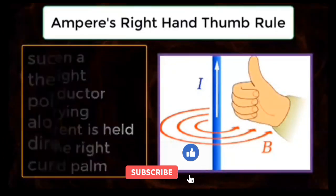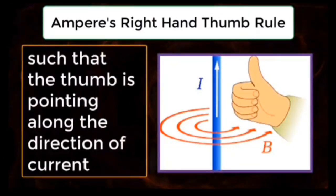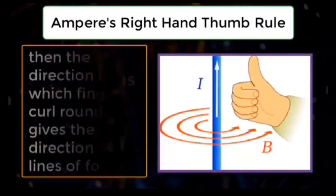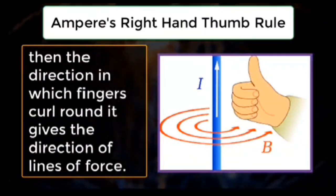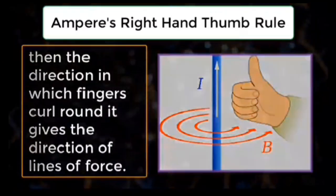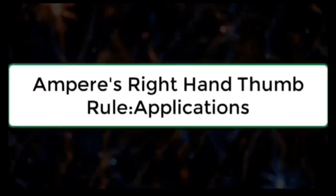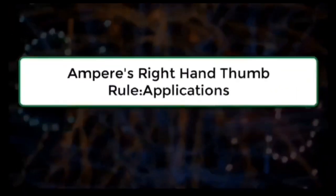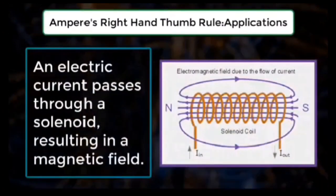such that the thumb is pointing along the direction of current, then the direction in which fingers curl around it gives the direction of lines of force. Ampere's right hand thumb rule application: an electric current passes through a solenoid